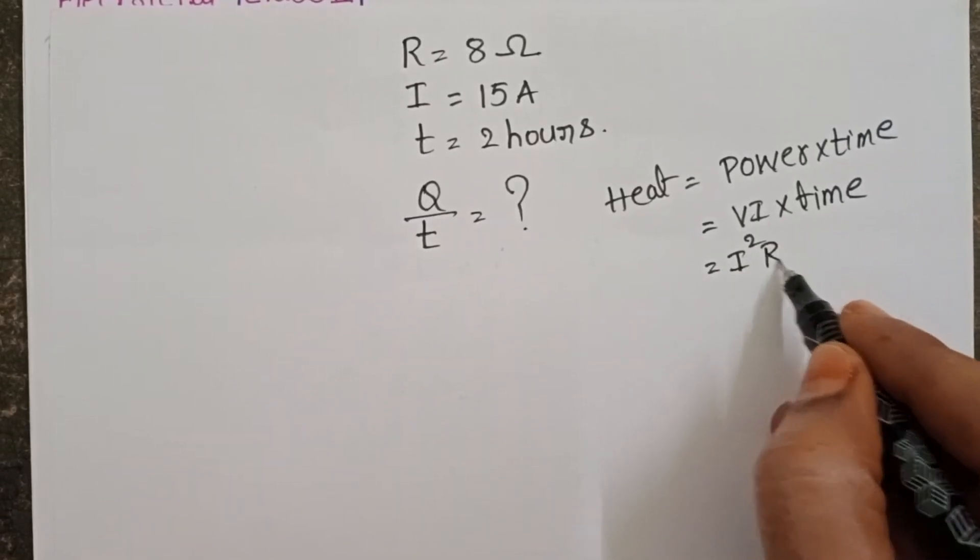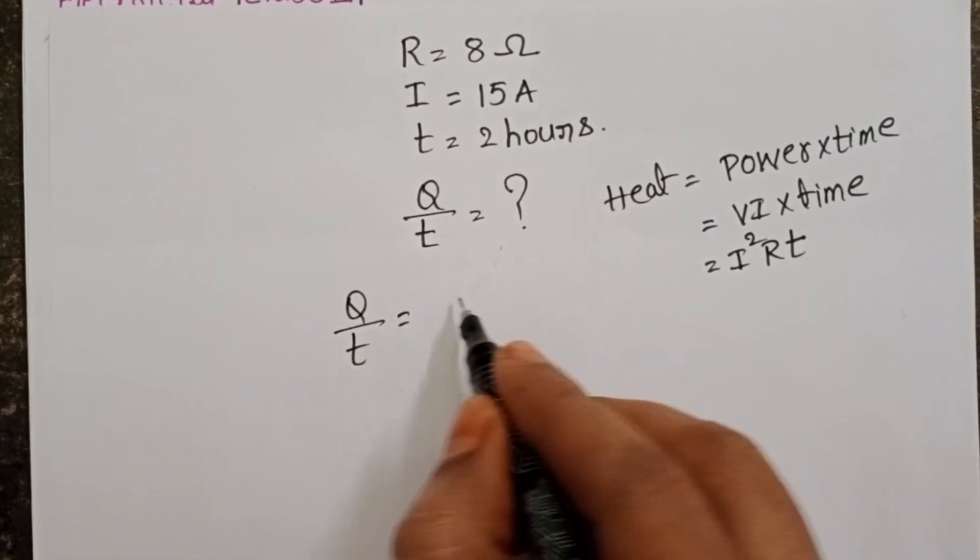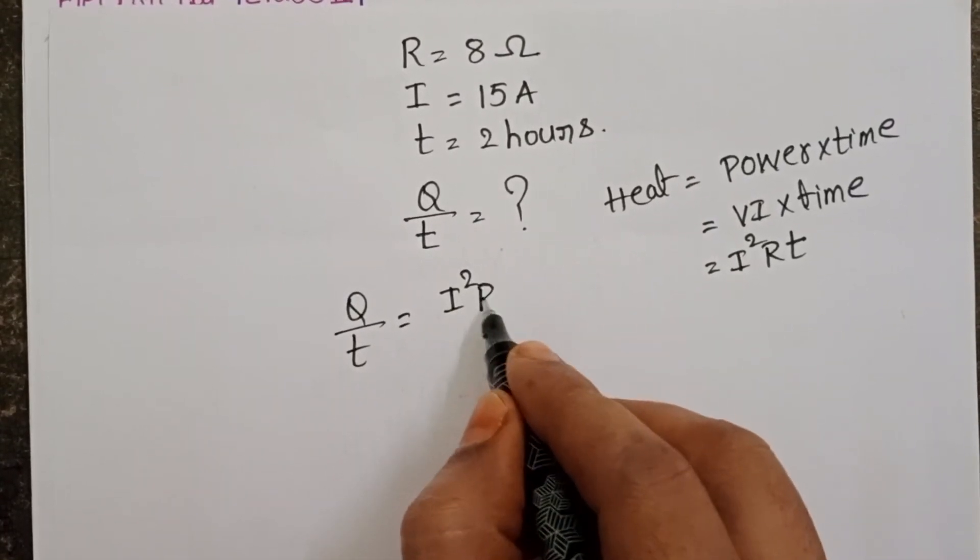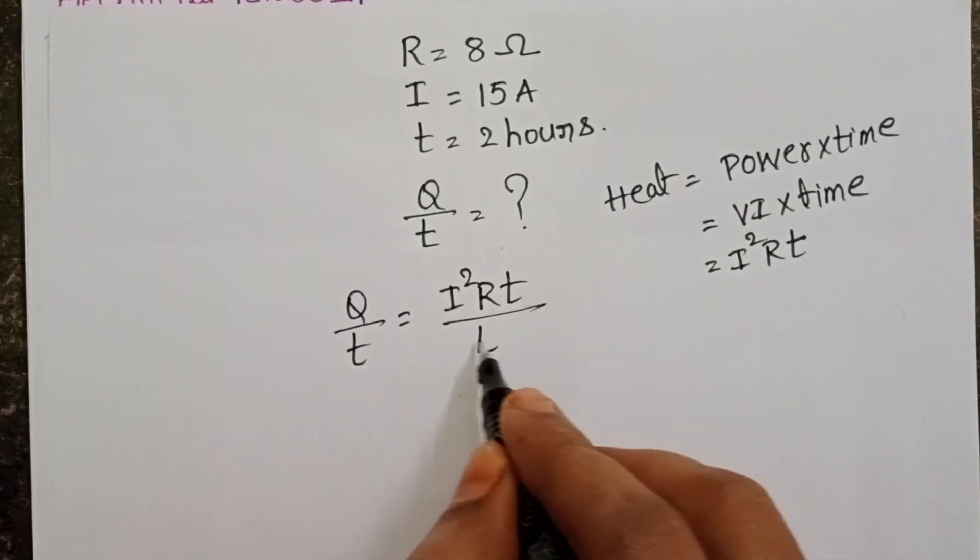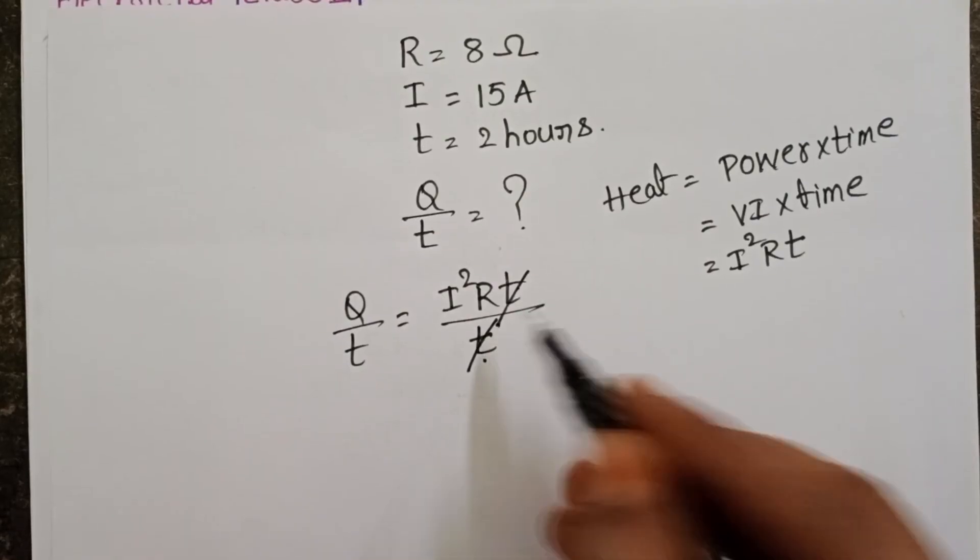And it becomes I square R T. Q by t is equals to I square RT by t. In numerator and denominator, time is there. Get cancelled.